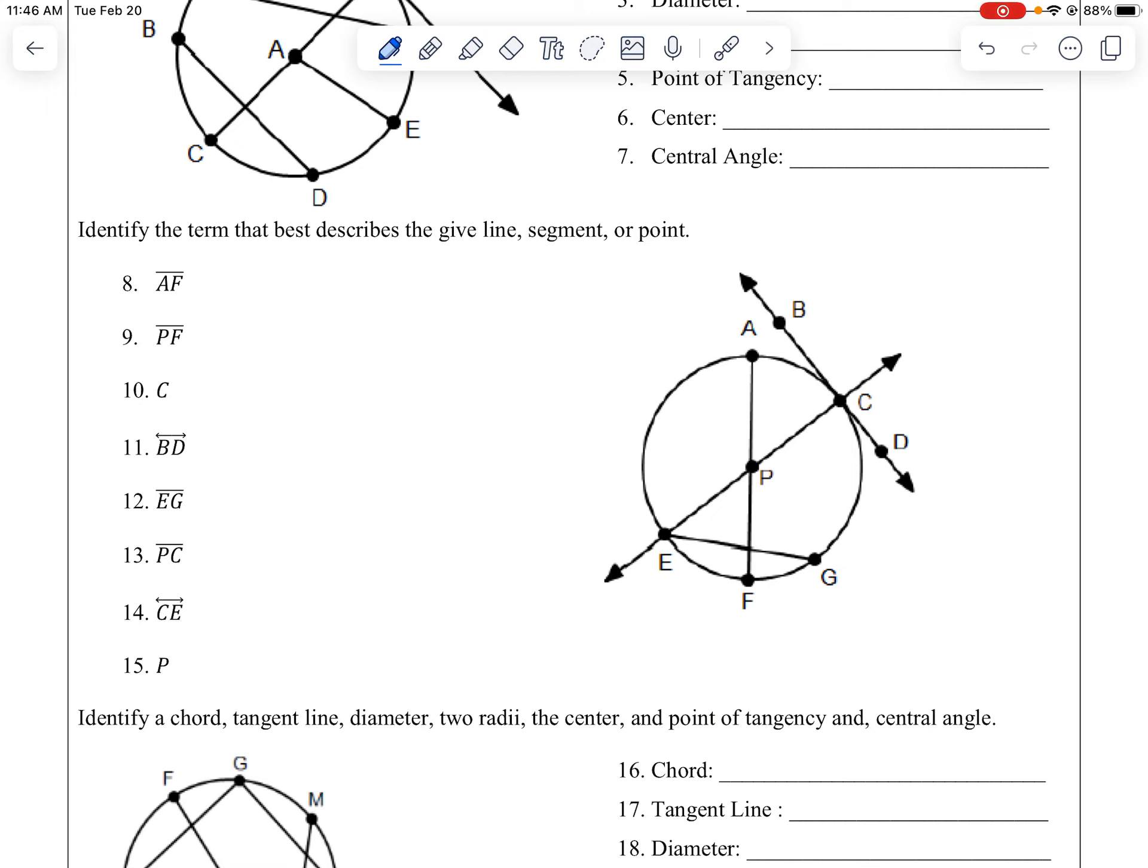On the next section, you're writing what's the best term to describe the thing. So we got A to F here, which is technically a chord. But it's also a diameter. What I want you to do is go for the most specific term. So we're going to go with diameter, because it's not just any old chord. It's one that goes through the center, which means it's a diameter, which is more special, more specific than just plain old chord. And so you just go down the list and you're like, what does that thing tell you about a circle?